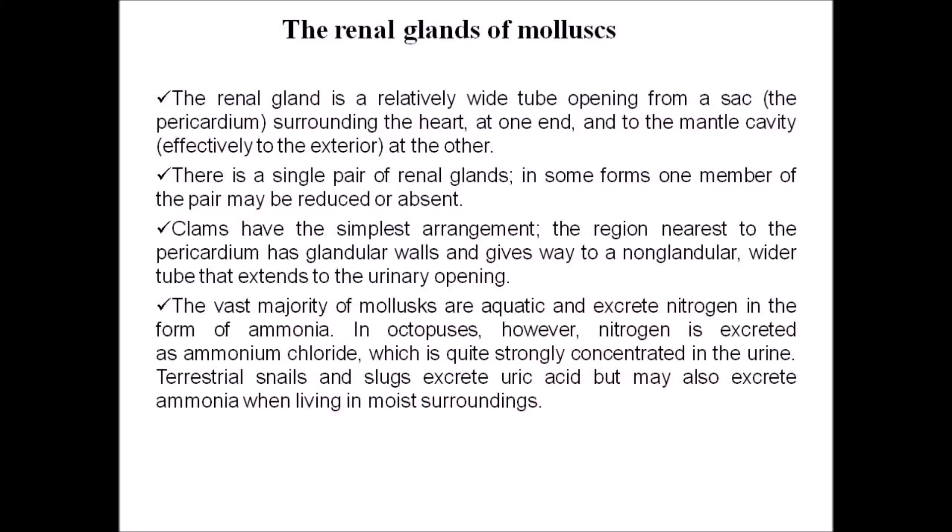The molluscan excretory organ is the renal gland. The renal gland is a relatively wide tube opening from a sac surrounding the heart — called the pericardium — at one end, and to the mantle cavity, effectively to the exterior, at the other. There is a single pair of renal glands in some forms; one member of the pair may be reduced or absent. Clams have the simplest arrangement. The region nearest to the pericardium has a glandular wall and gives way to a non-glandular vital tube that extends to the urinary opening. The vast majority of molluscs are aquatic and excrete nitrogen in the form of ammonia.